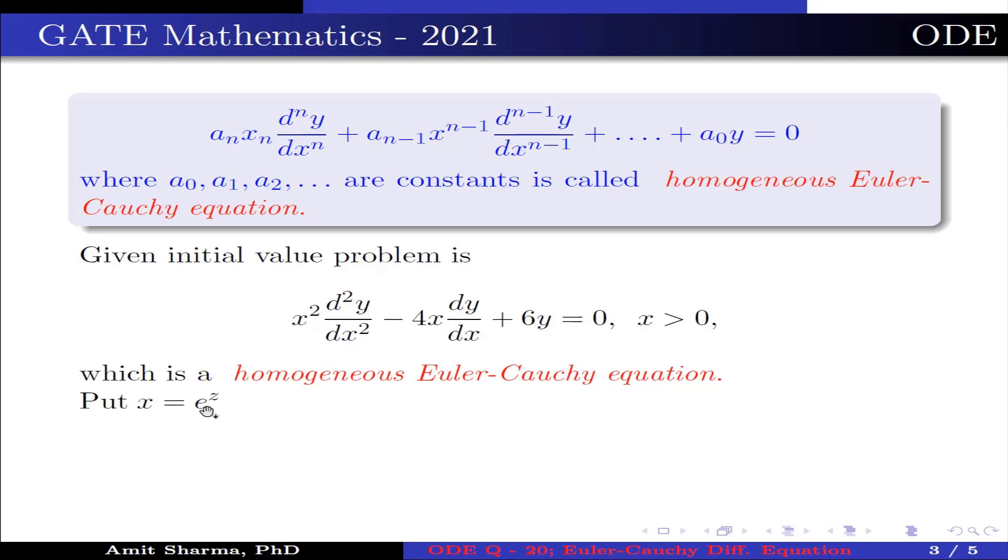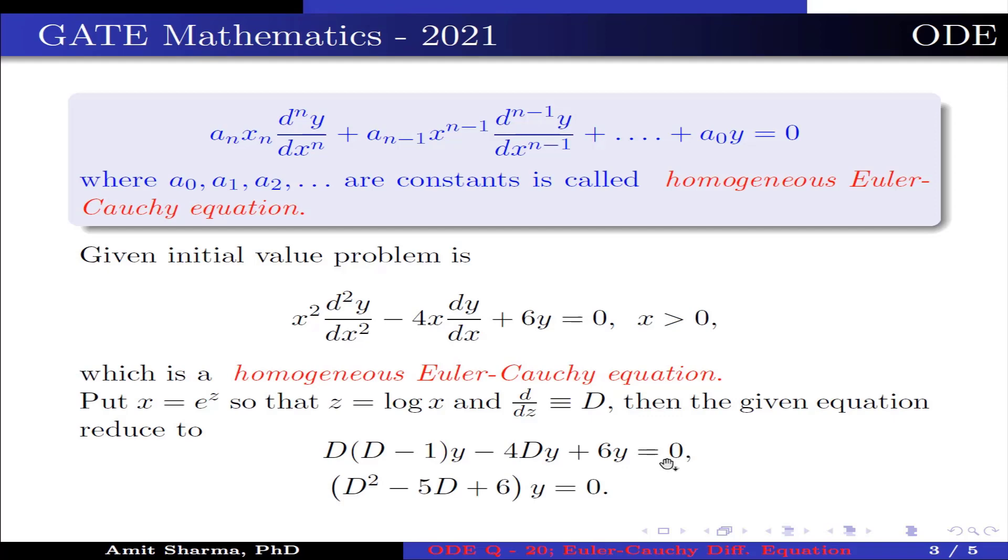Put x = e^z, so that z = log x and d/dz = D. Then the given equation reduces to D(D-1)y - 4Dy + 6y = 0, which can be further written as D² - 5D + 6y = 0.